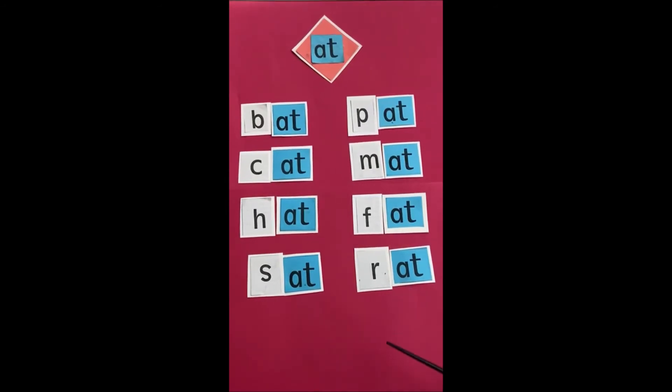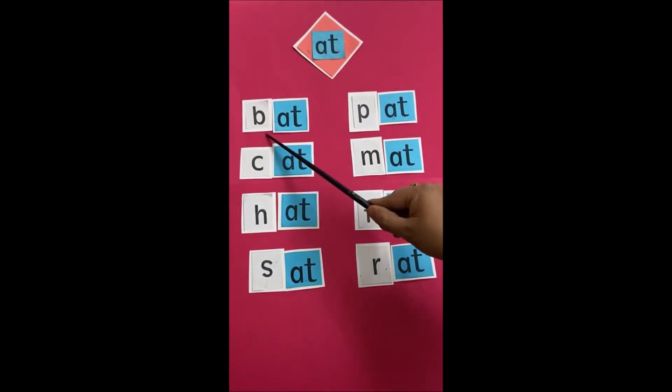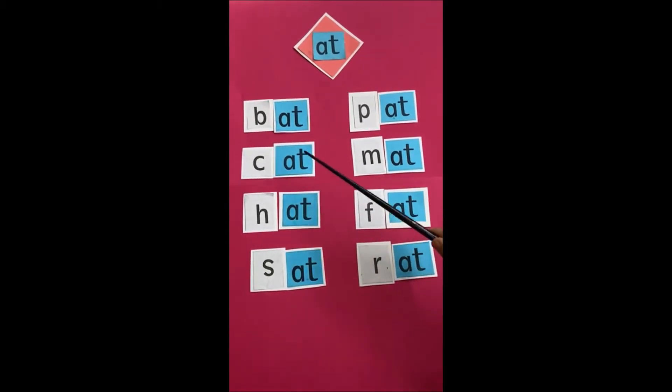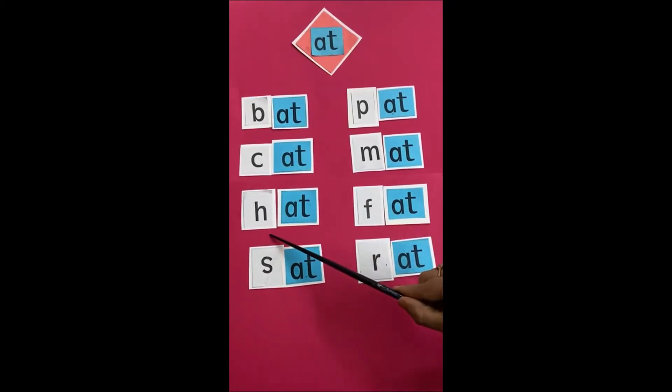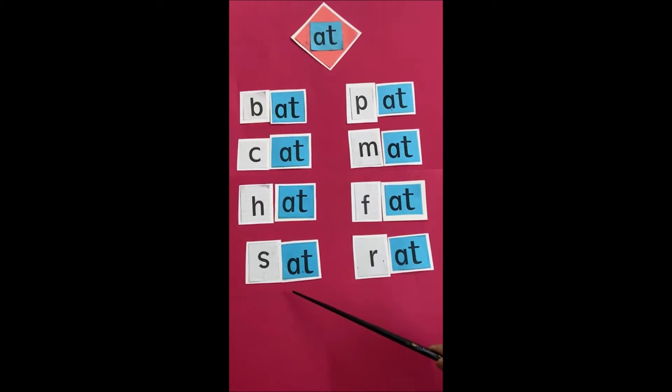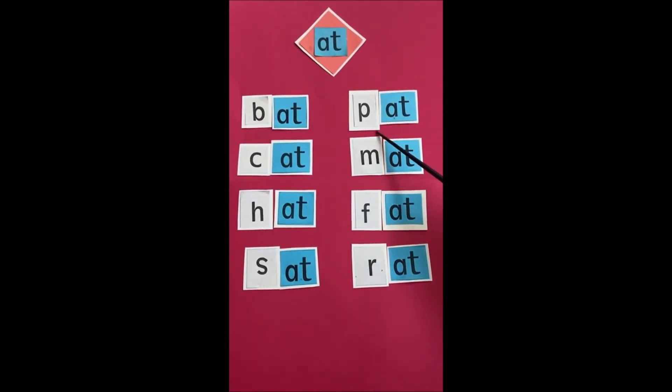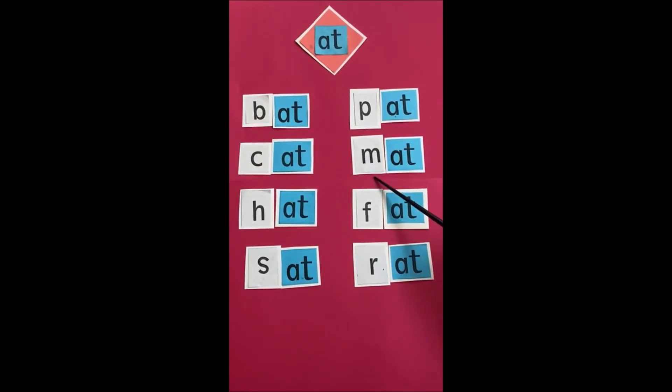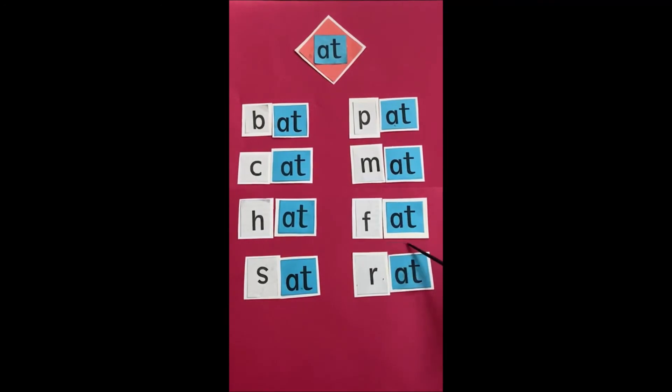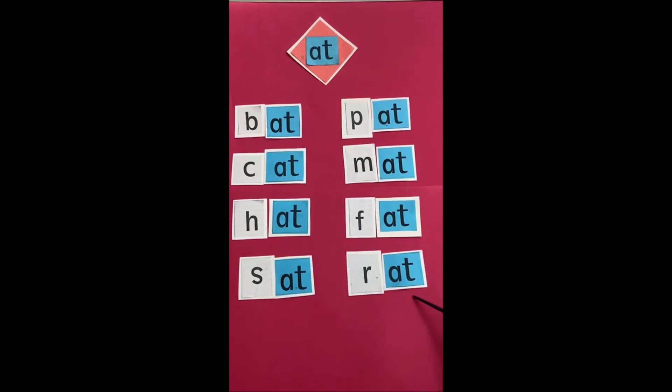At. So now, let's repeat the words again. B at bat. K at cat. H at hat. S at sat. F at bat. At at mat. F at fat. R at rat.